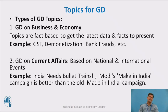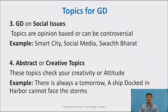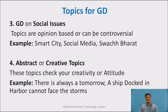The second category is GD on current affairs — topics based on national and international events. Examples include 'India needs bullet trains' or 'Modi's Make in India campaign.' The third category is GD on social issues — opinion-based or sometimes controversial topics. Examples include smart city, social media, and Swachh Bharat. The last category is abstract or creative topics, which check your creativity or attitude.